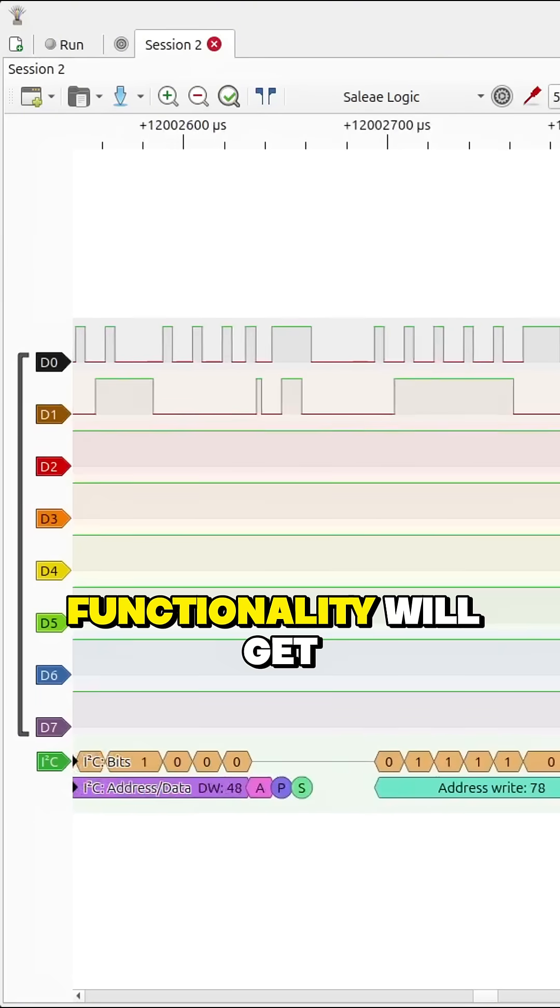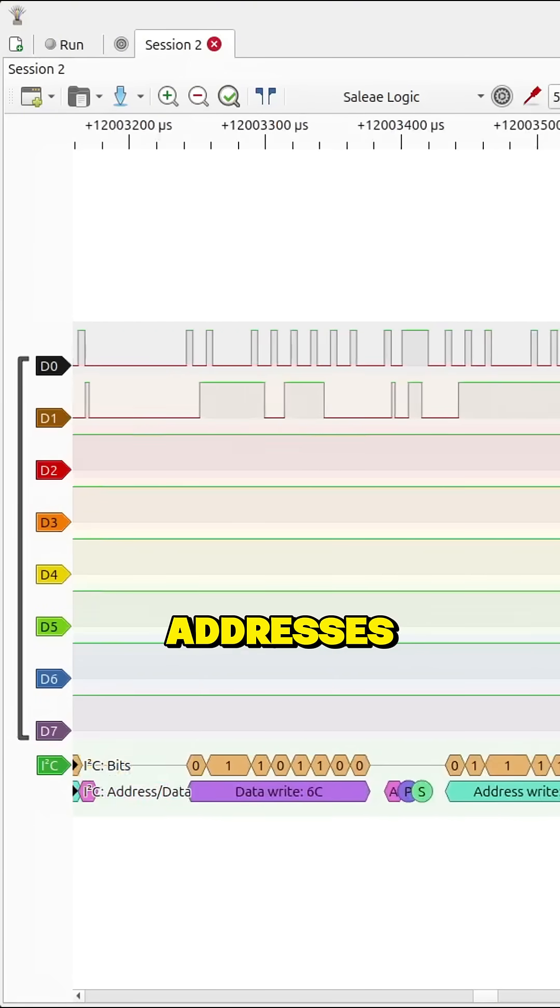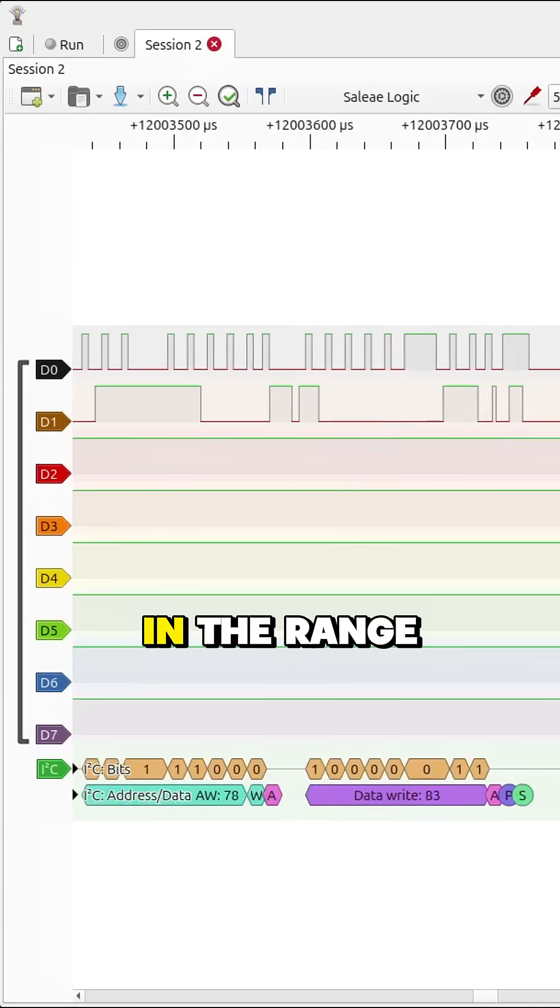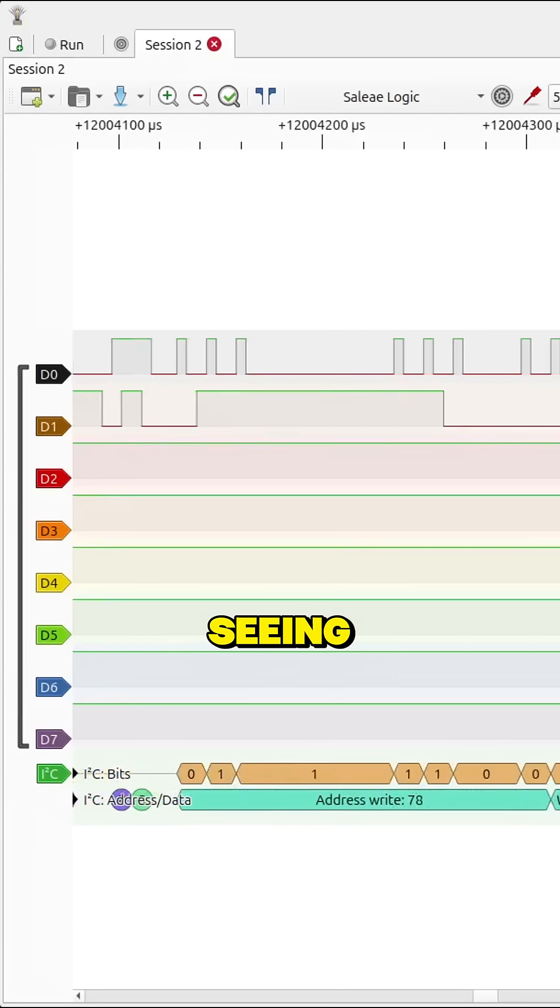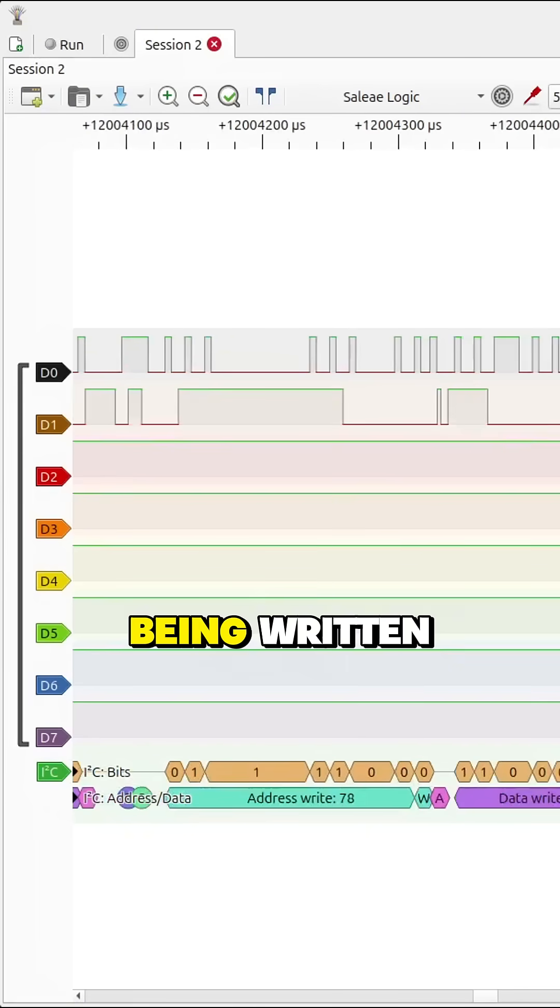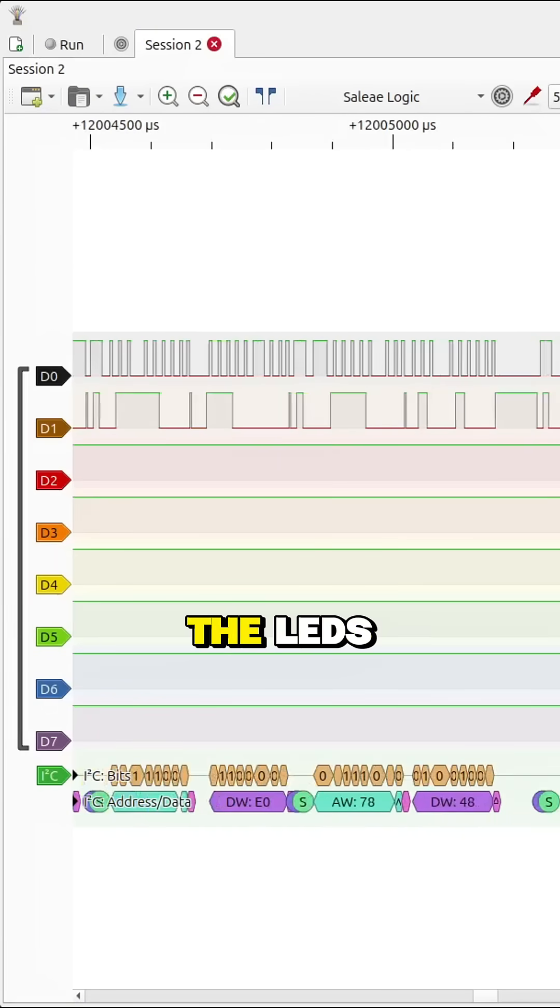Usually devices of similar functionality will get similar addressing, and the addresses we're actually seeing here are all in the range of LED drivers. So what we're likely seeing here is the data that's actually being written to that LED driver to tell it how to control the LEDs.